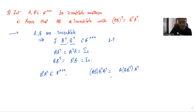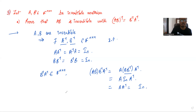I can do this because matrix multiplication is associative. Then B times B inverse is the n×n identity matrix, so this becomes A times A inverse, which is the identity matrix.